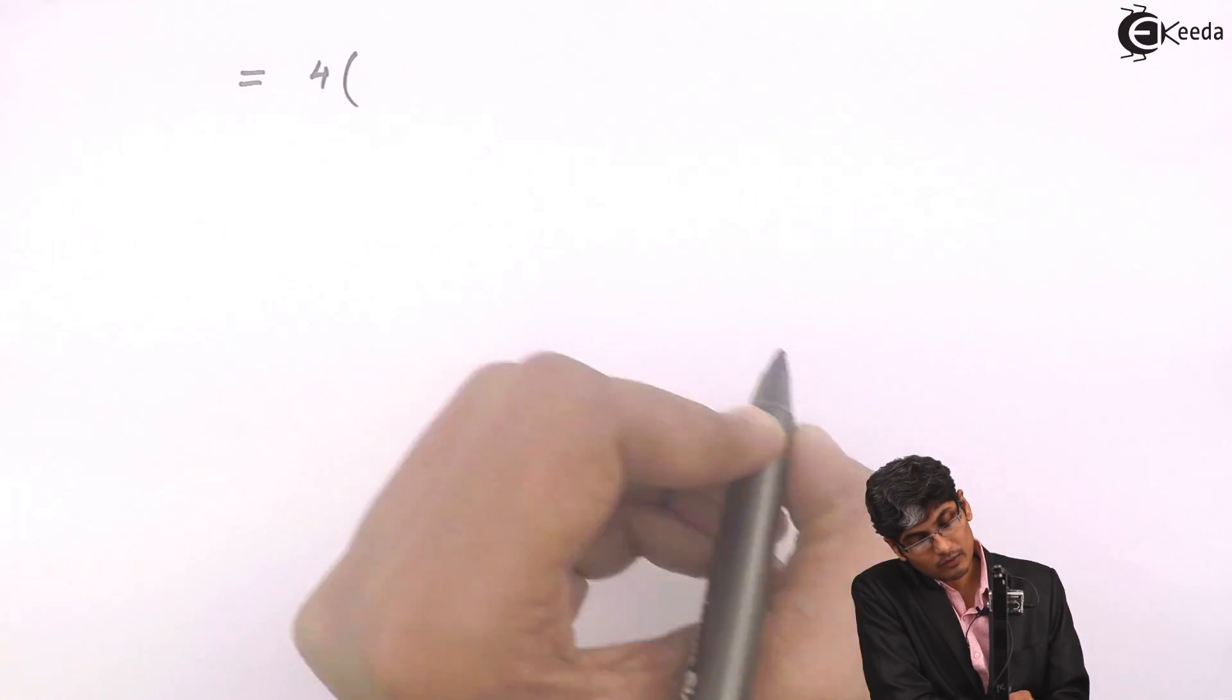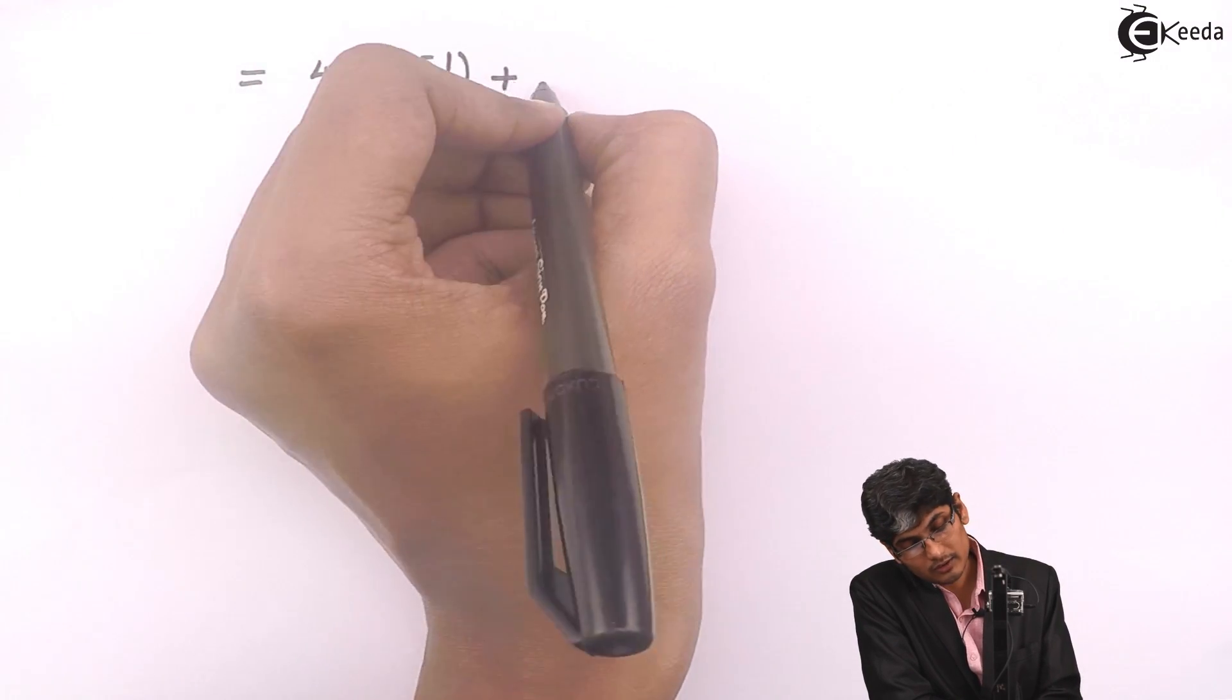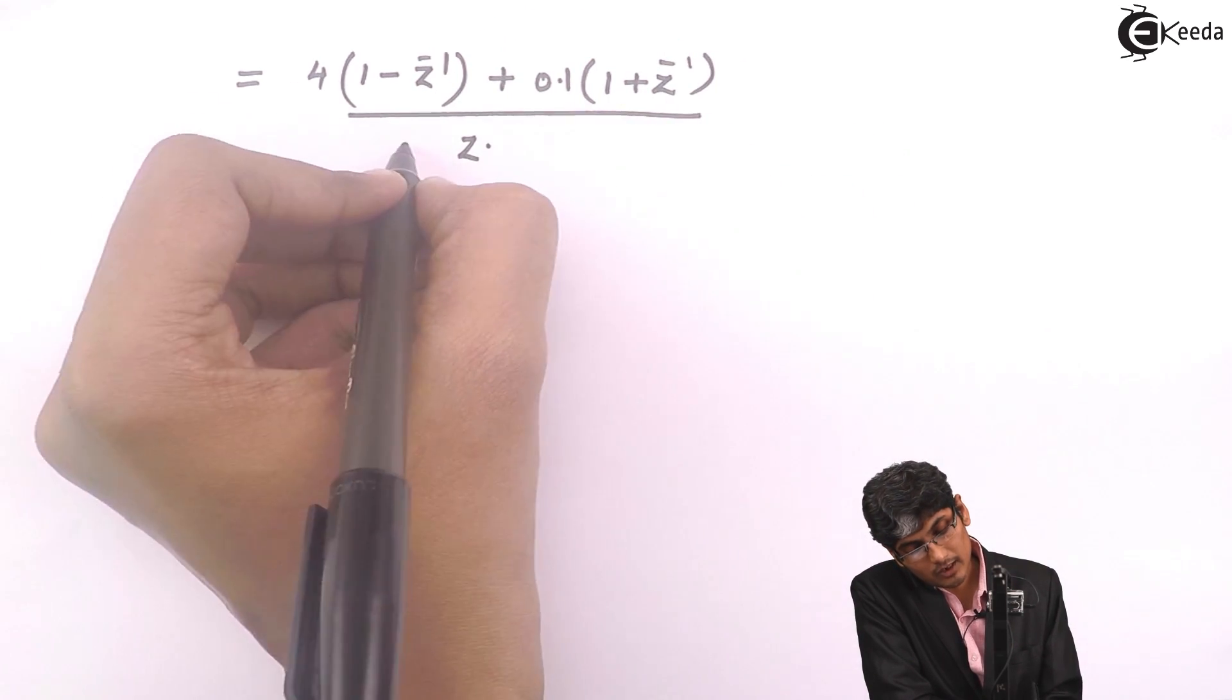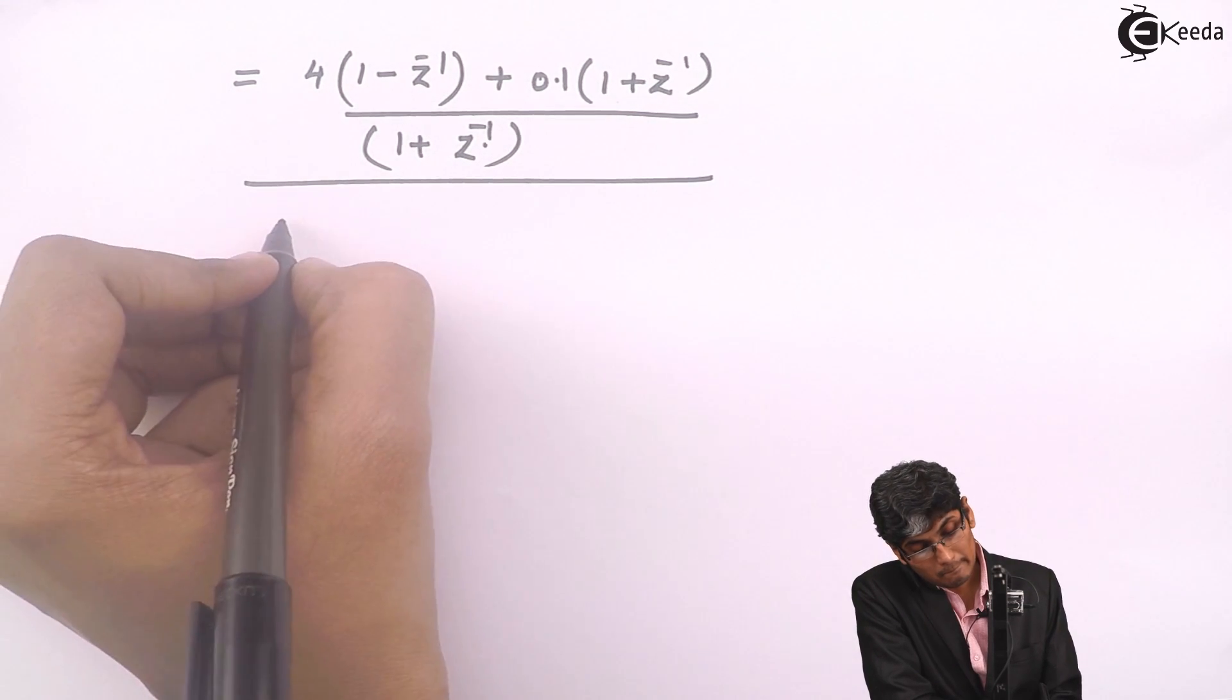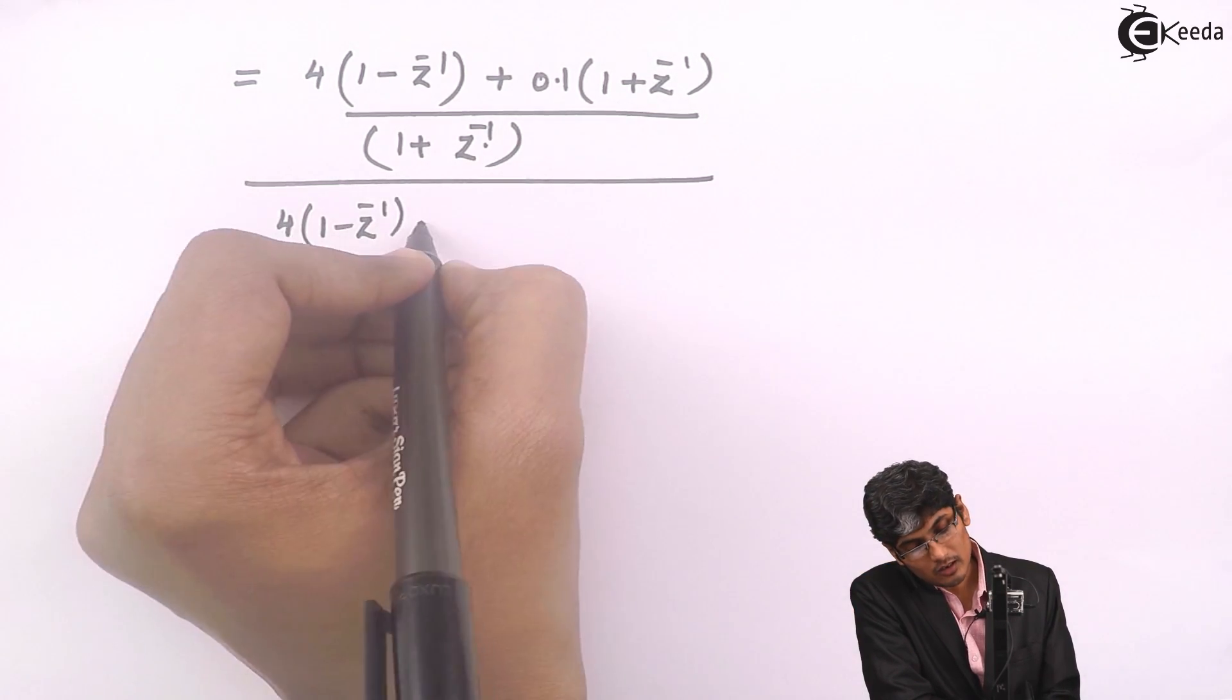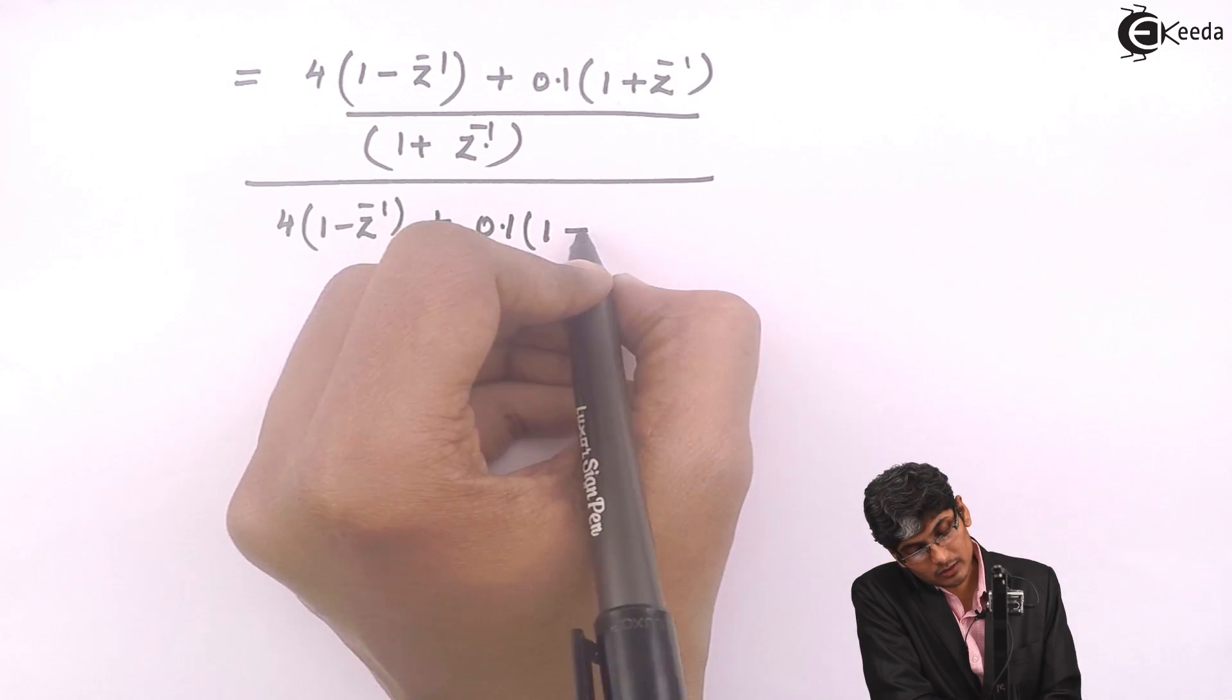Now to solve this problem I will get this as 4 in the numerator I will make it as 1 minus Z inverse plus 0.1 into 1 plus Z inverse the whole divided by 1 plus Z inverse. This will be again I will keep as 4 into 1 minus Z inverse plus 0.1 into 1 plus Z inverse.